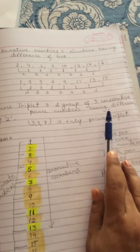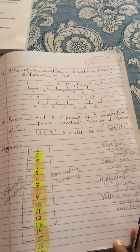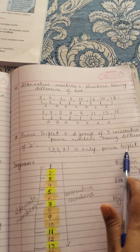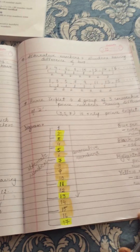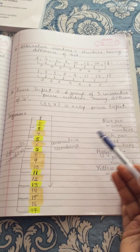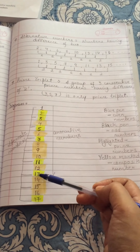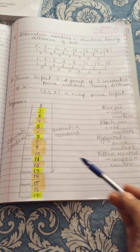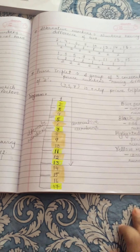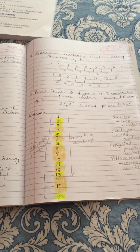Next, prime triplet: a group of 3 consecutive prime numbers having a difference of 2. There is only one such group: (3, 5, 7) is the only prime triplet. For all these numbers, I have made a diagram — marked with pencil for even numbers, blue pen for odd numbers, highlighted for prime numbers, yellow for composite numbers, and in sequence for consecutive and alternate numbers. Go through this video and note down the points which I will share with you through pictures. Thank you.